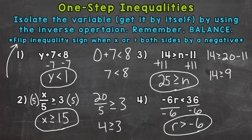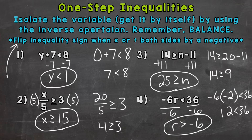Anything greater than negative six is going to make that inequality true. Let's try out negative two — negative two is greater than negative six, so let's plug that in. Negative six times negative two is less than 36. Negative six times negative two is positive 12, which is less than 36. So negative two would be a solution, along with anything else greater than negative six. The reason we flip that inequality sign is because flipping the sign will make the inequality true — without flipping it, we'd get incorrect solutions, the opposite of what we want.